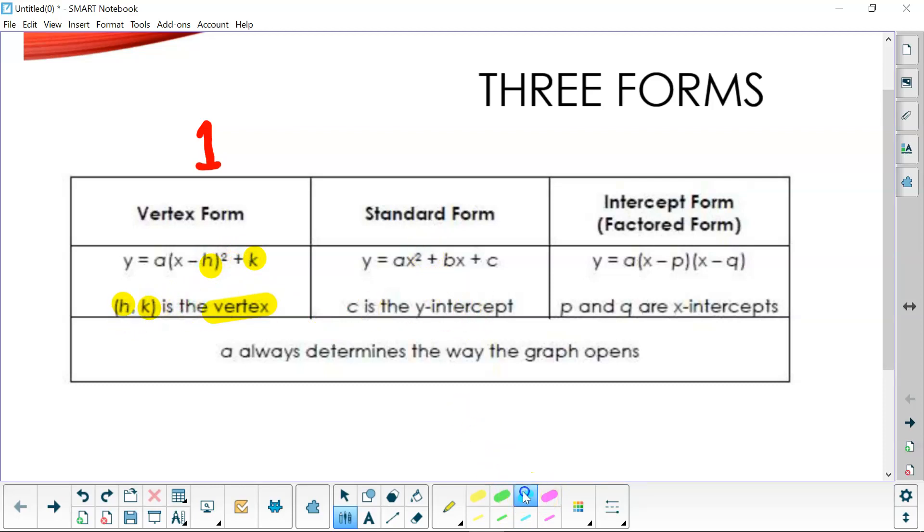Now we also have the standard form where c, the number in the c position, is going to be your y-intercept or the place where the graph crosses the y-axis.